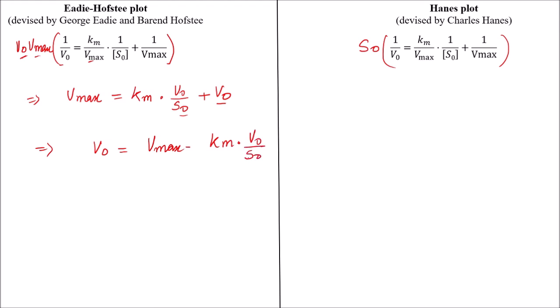Whereas in the Hanes plot, the same equation will look like S0 by V0 equals Km by V max plus S0 by V max. We can also write these as the variable.